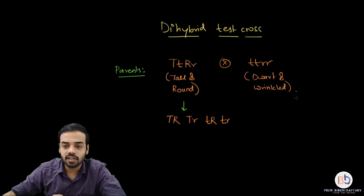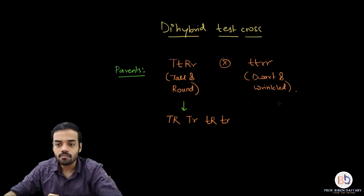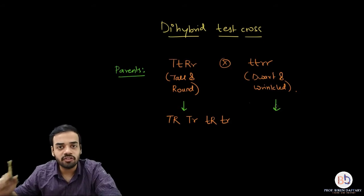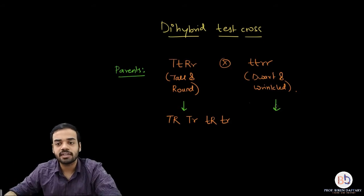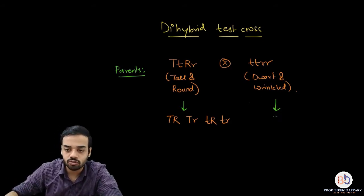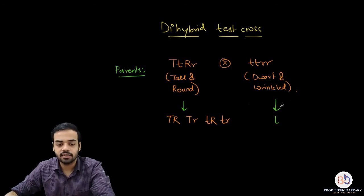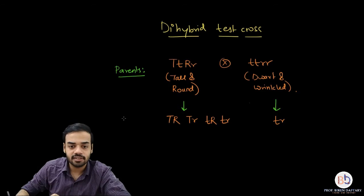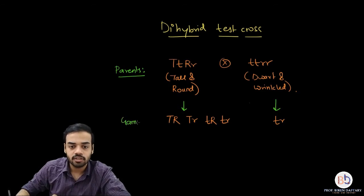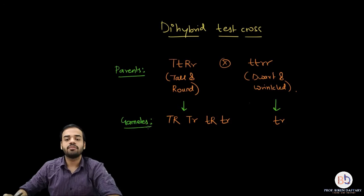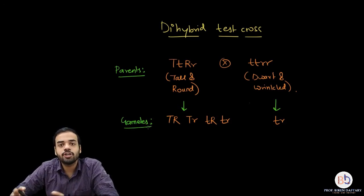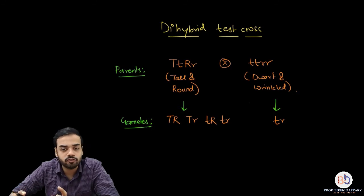Now, the other parent, small t small t small r small r, can only produce one type of gamete, which is going to be small t and small r. So let me write that down. Now we have to combine the gametes, and there are going to be four possibilities for the offspring.